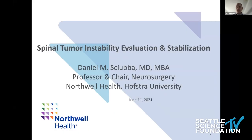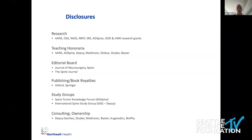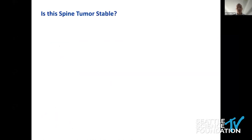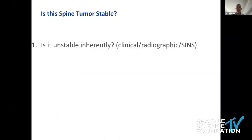Today we're going to talk about spinal tumor instability, evaluating if it's stable, and the evaluation to stabilize if needed. When I think about whether a spine tumor is stable, I always think about it in three different ways. One: is it inherently unstable right now? You have to ask yourself when you see a picture, when you see a patient, is it inherently unstable this second?